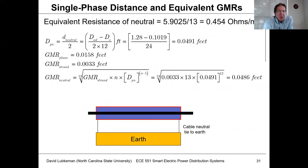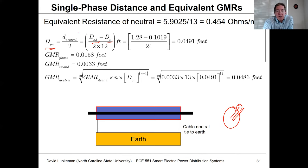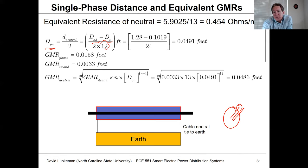To calculate D_PN, which wasn't directly given, we take the outside diameter, subtract the strand diameter, and divide by two. This gives D_PN in inches. Dividing by 12 converts to feet, giving D_PN = 0.0491 feet.